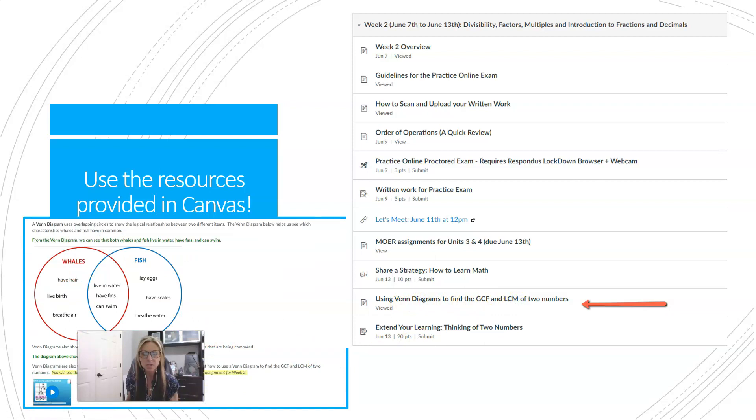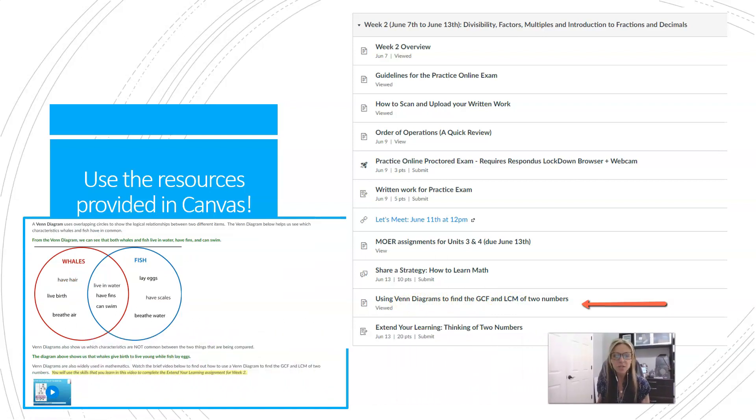On that content page, you see I have a little mini lesson here for you explaining how to use Venn diagrams appropriately, and then there's even a little video for you to watch to show you how to make the factor tree to find the GCF and LCM of two numbers.